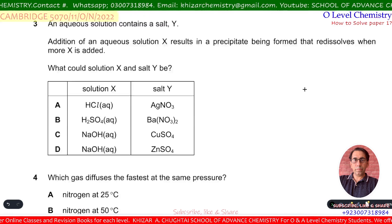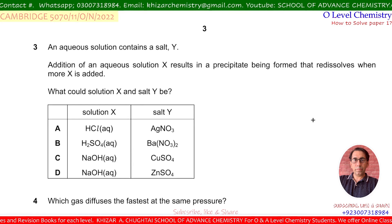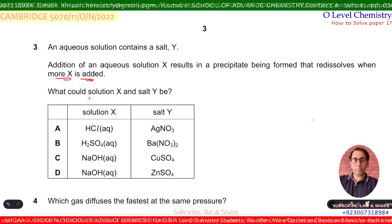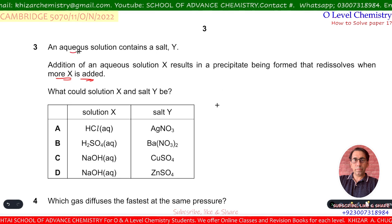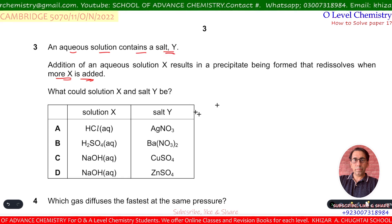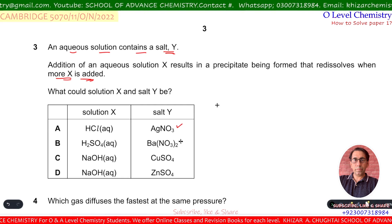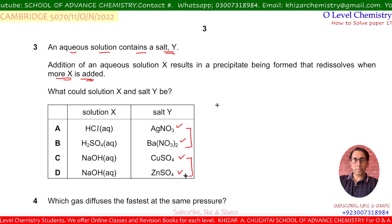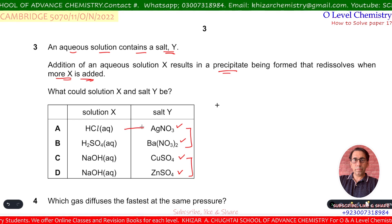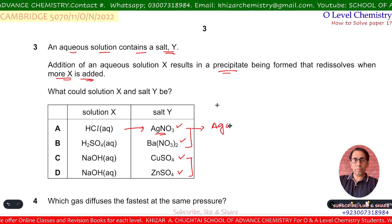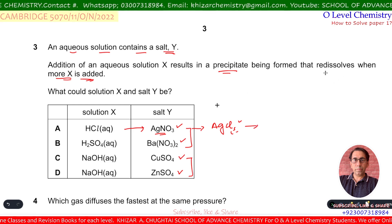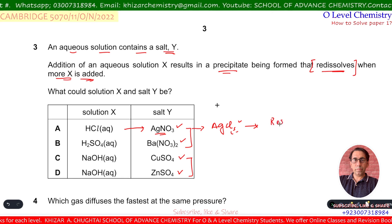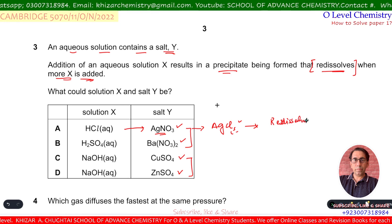Question number 3. An aqueous solution contains a salt Y. Addition of solution X results in a precipitate that redissolves when more X is added. The possible Y salts are silver nitrate, barium nitrate, copper sulfate, and zinc sulfate. When HCl is added to AgNO₃, white AgCl precipitate forms, but AgCl does not redissolve in excess — so option A is incorrect.